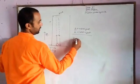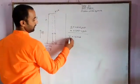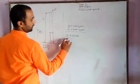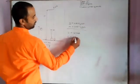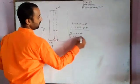And v is equal to u plus at. The final velocity is v, initial velocity is u minus g into t. This is the second equation.